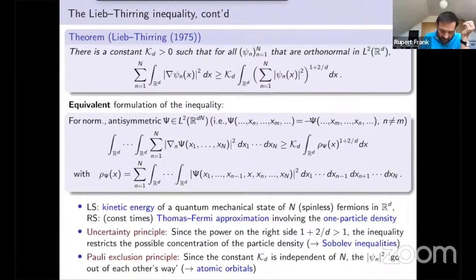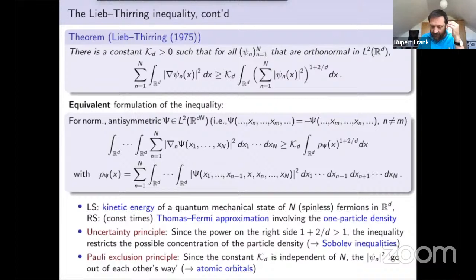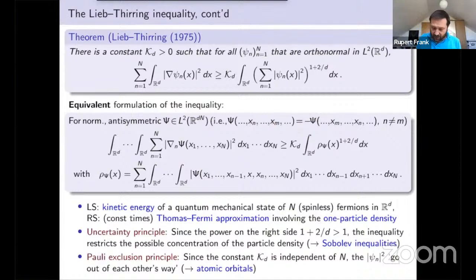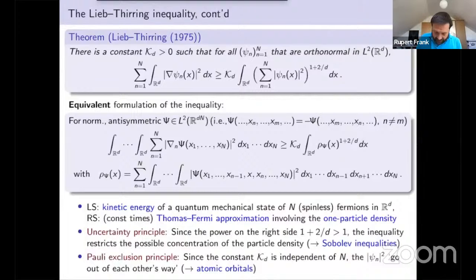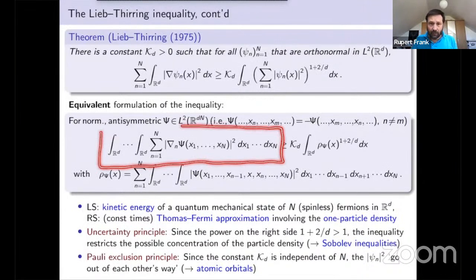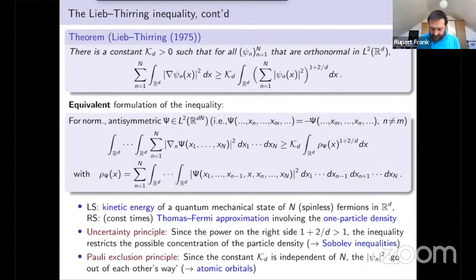We assume the function is anti-symmetric, which means that if you swap two coordinates you pick up a minus sign. This anti-symmetry corresponds to the orthonormality mentioned before, and physically means that the particles we are considering are fermions, like electrons. The left side in this physics interpretation stands for the quantum mechanical kinetic energy of such a state — you have many integrals and many gradients.